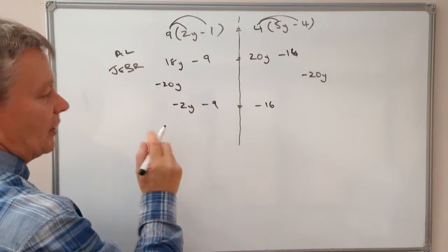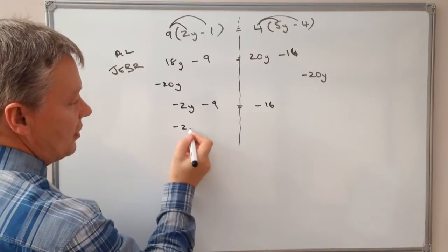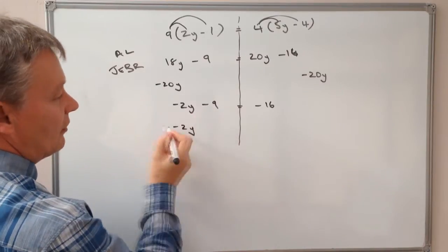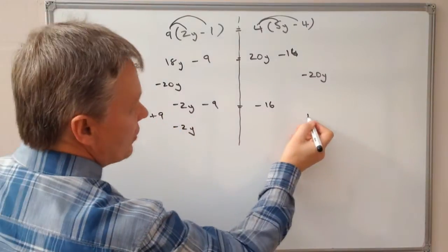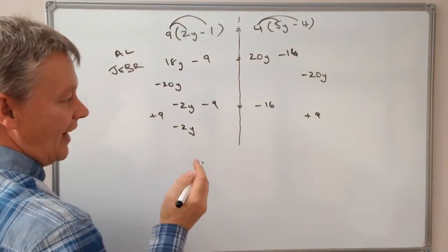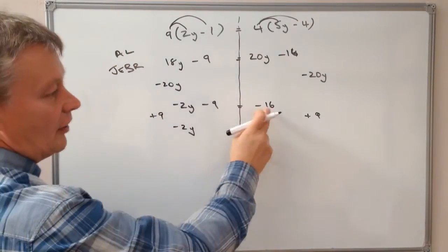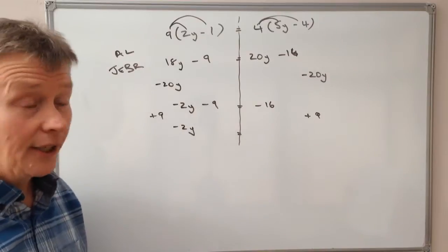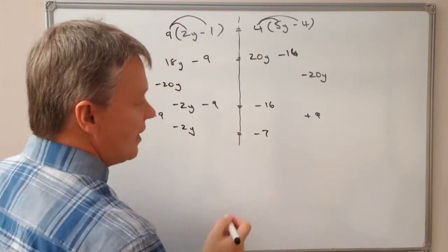Now I've still got minus 2y on this side, but I'm going to add 9 to both sides. If I add 9 to both sides, I get rid of this, and on this side I get minus 7.